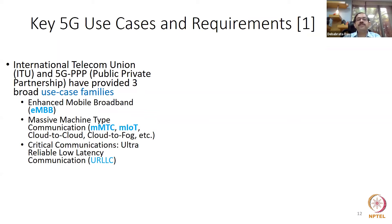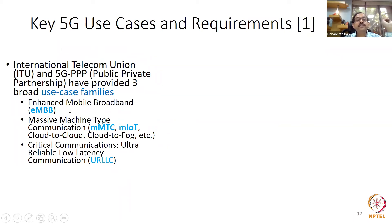The three categories are: first, eMBB — Enhanced Mobile Broadband — which covers your mobile calls, video conferencing, broadband. It is 'enhanced' because quality of service has to improve over 4G. Second, mMTC — Massive Machine Type Communication — massive machine-to-machine communication like robots and servers communicating, drone-to-drone, and massive IoT — for example, your air conditioner doing things automatically with no human involvement.